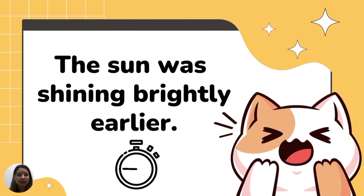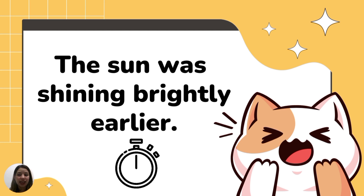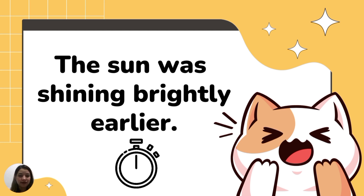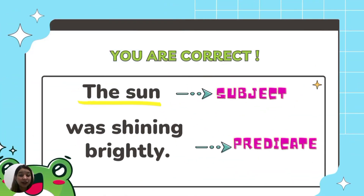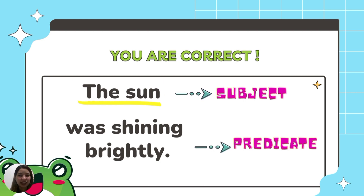Let's have the first one. The sun was shining brightly earlier. Can you guess the complete subject and the complete predicate in this statement? You are correct! The sun is the subject. What's shining brightly is the predicate.